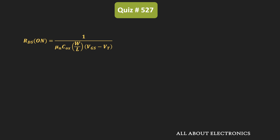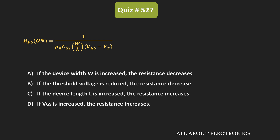Now let us evaluate the four given statements. The first statement says: if the device width W is increased, then the resistance will decrease. Looking at the expression, if W increases then RDS(on) will reduce — so indeed the resistance decreases. Therefore, the first statement is correct.